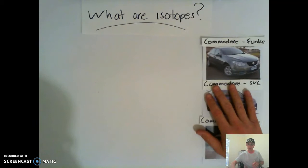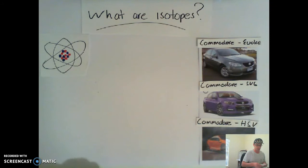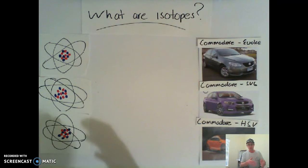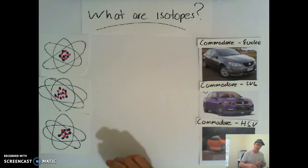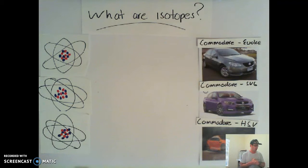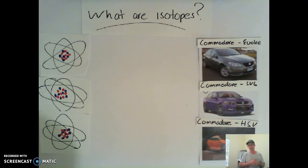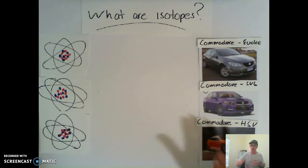So we have these three different models. Now I want to use this analogy to talk about the same thing, but with atoms. I want to introduce you to three different versions of the carbon atom. Just like there were three different models of the Commodore, we've got three different models of the carbon atom. And here's the drawings of each one. As you can see, we've got the nucleus with our red and blue dots. And then we've got the swirling lines around the outside, which represent the electrons, but we don't need to worry about the electrons at the moment. Just like we had our three models of the Commodore, there was something that all of them had in common — that distinctive styling, that's what made them a Commodore.